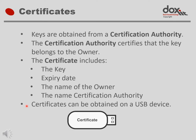It is not just a standard memory stick, because it includes a chip which makes it impossible to copy information from the device. When one buys an encryption key from a certification authority — or certification service provider as it is called in the ECT Act — the key comes with extra information such as the name of the owner and expiry date. The key, combined with this extra information, is called a certificate. The certificate is stored on a very secure USB device.